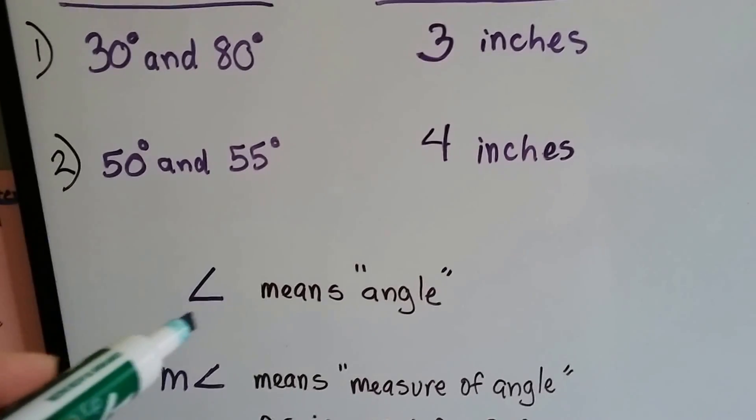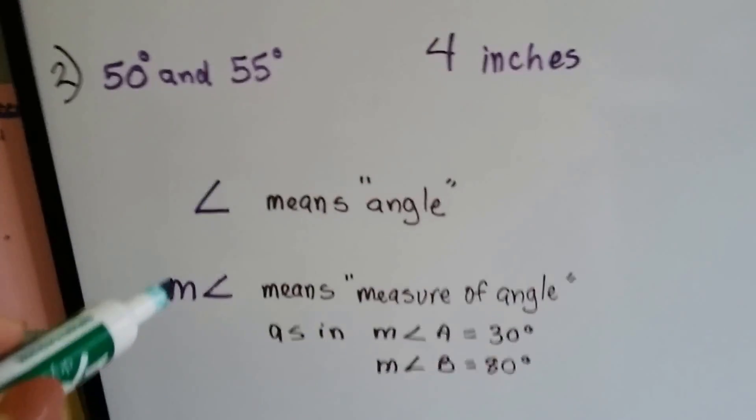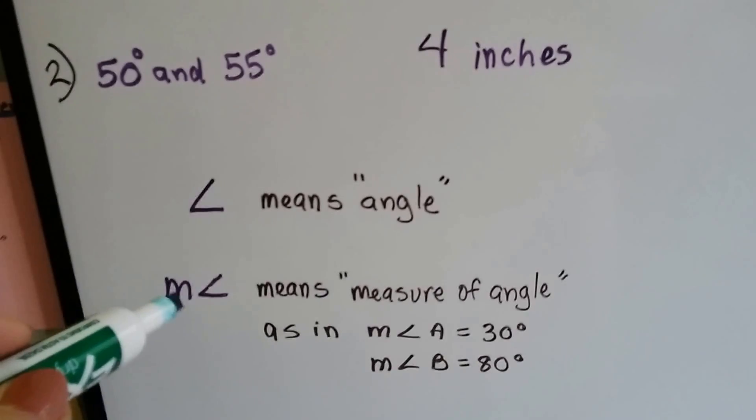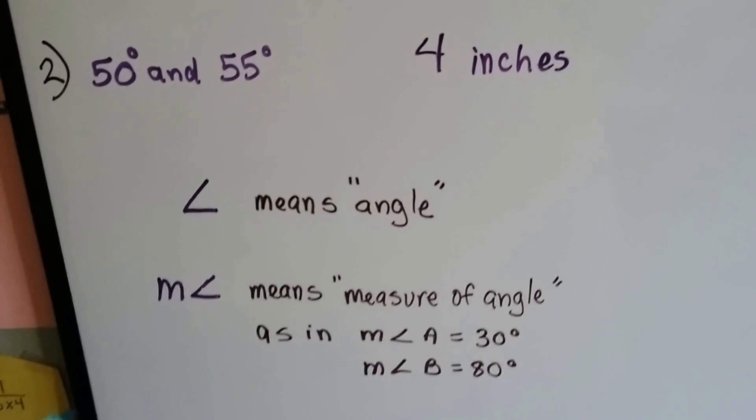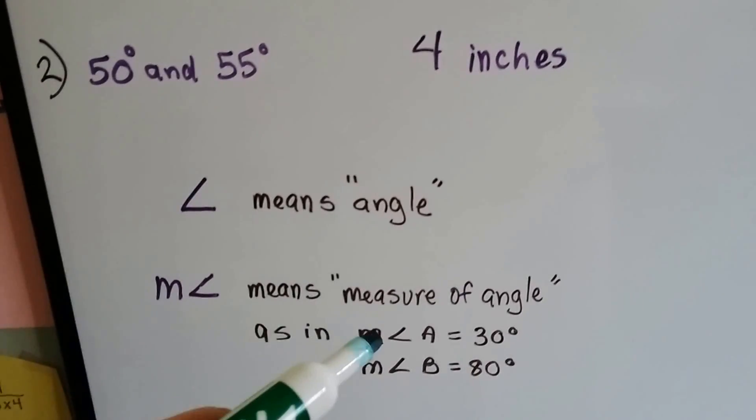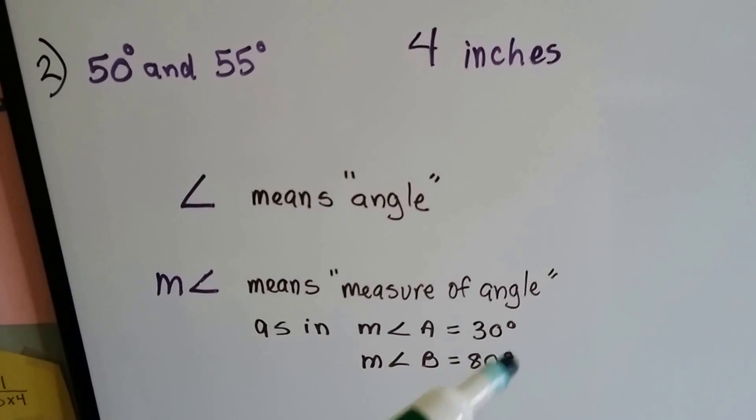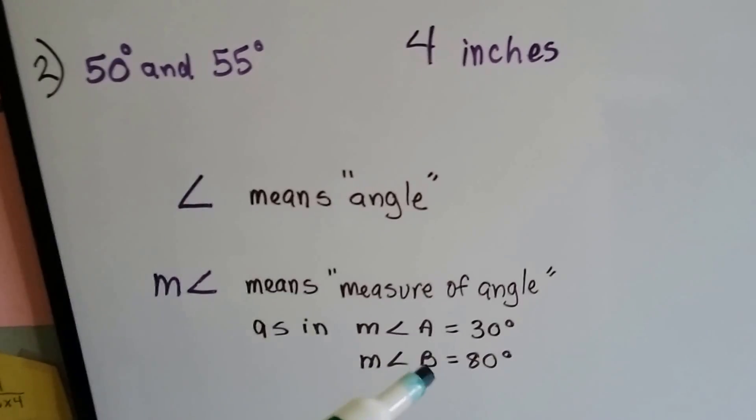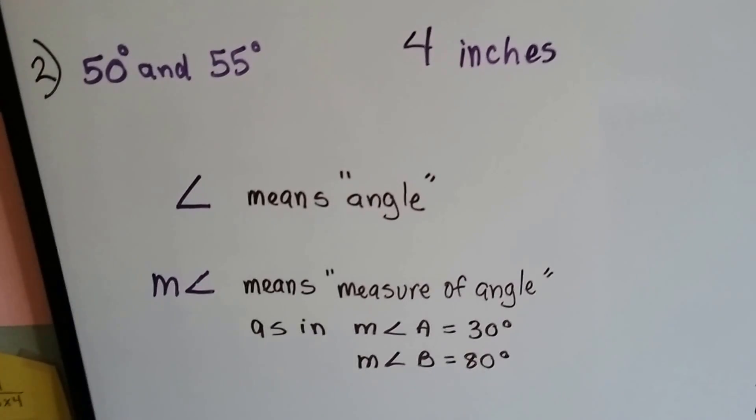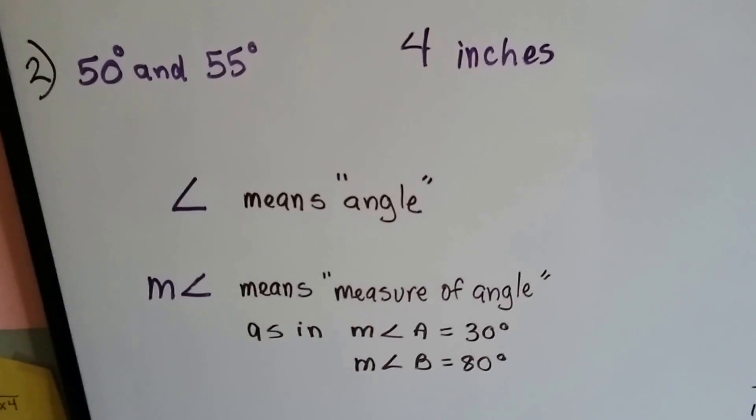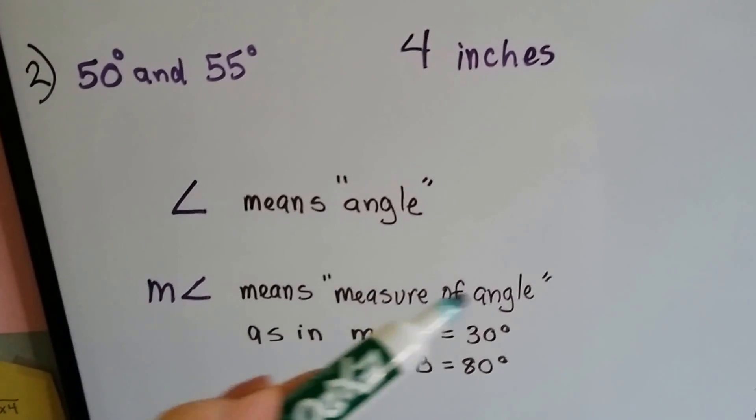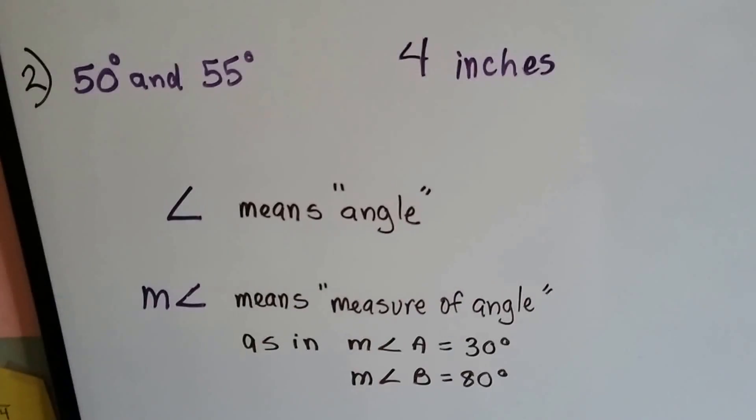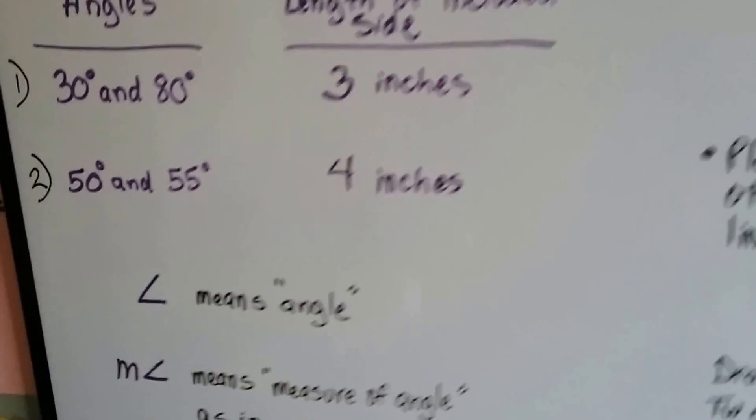When you see this little symbol, it means angle. And when you see an M in front of it, it means the measure of the angle. As in, the measure of angle A equals 30 degrees, or the measure of angle B equals 80 degrees. It's just a shorthand, quick way of saying measure of the angle, so you don't have to write the whole thing out.